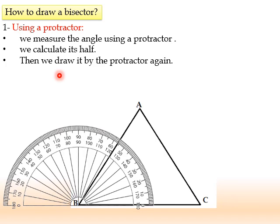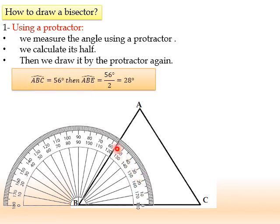For example, here we have ABC. I have to draw the bisector of angle ABC. Look, we always start from the 0. 10, 20, 30, 40, 50. It's 56. Now, what's the half of 56? It's 28.